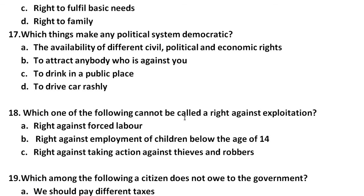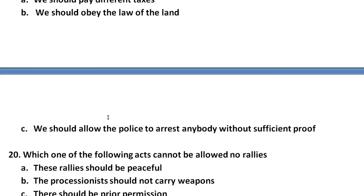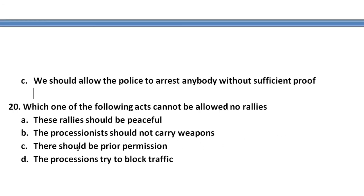Question number 18: Which one of the following cannot be called a right against exploitation? The options are: A) right against forced labour, B) right against employment of children below the age of 14, C) right against taking action against thieves and robbers. Also, one option states we should obey the law of the land, and another says we should allow police to arrest anybody without sufficient proof. Identify which cannot be a right against exploitation.